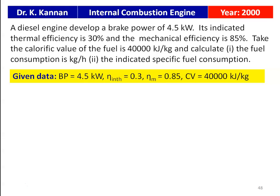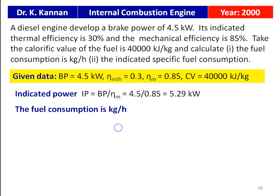The given data: brake power equals 4.5 kilowatts, indicated thermal efficiency is 0.3, mechanical efficiency is 0.85, calorific value is 40,000 kilojoules per kilogram. The indicated power IP equals BP divided by mechanical efficiency: 4.5 divided by 0.85 equals 5.29 kilowatts.